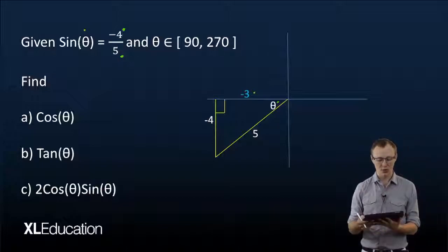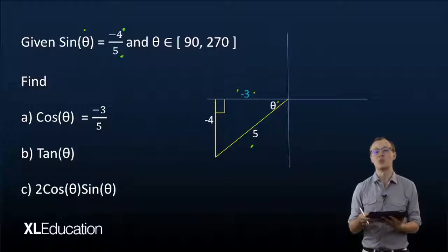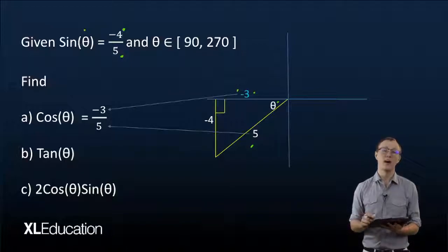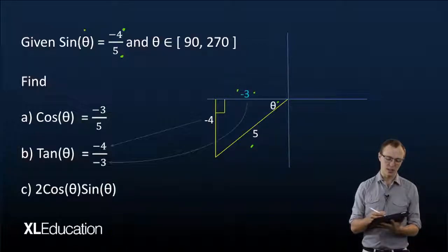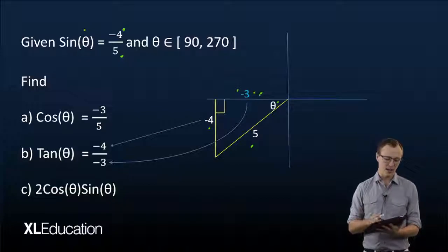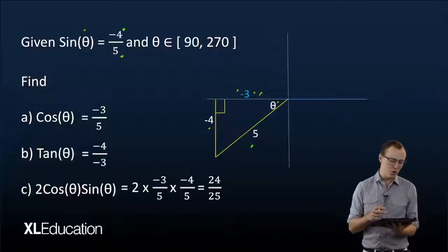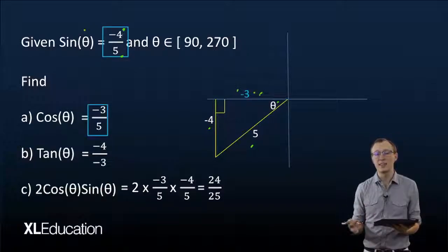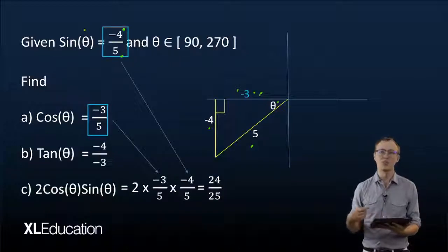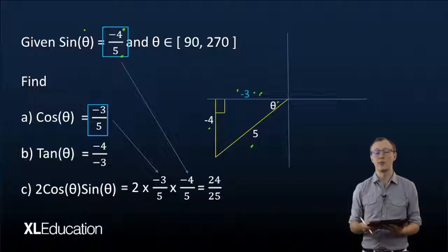Now we simply read our answers off the triangle. Cos of theta is equal to the adjacent over the hypotenuse, which equals negative 3 over 5. Tan of theta is equal to the opposite over the adjacent, which equals negative 4 over negative 3. For the more complicated expression 2·cos(theta)·sin(theta), we already know what cos theta and sin theta are, so we substitute in those two numbers and once we simplify we get 24 over 25.